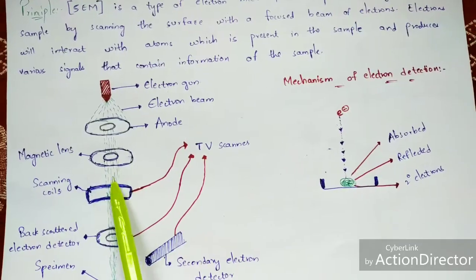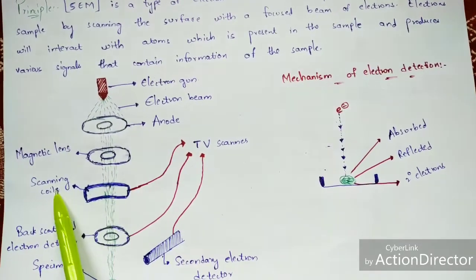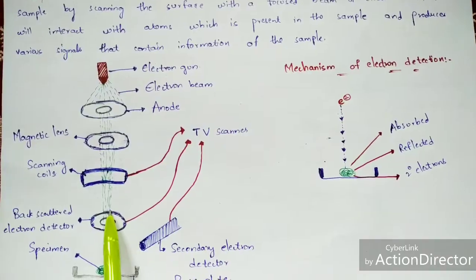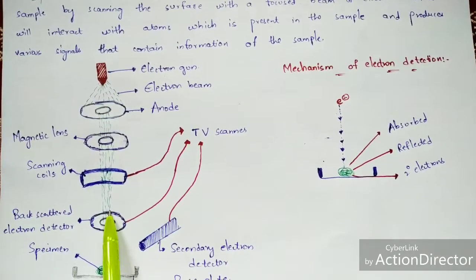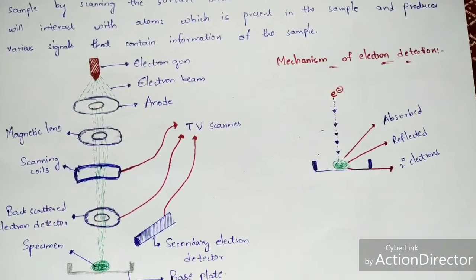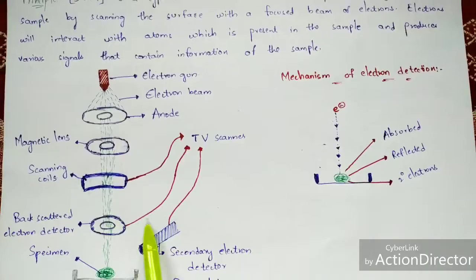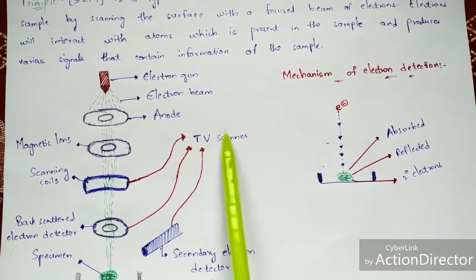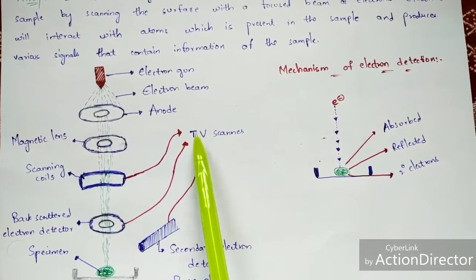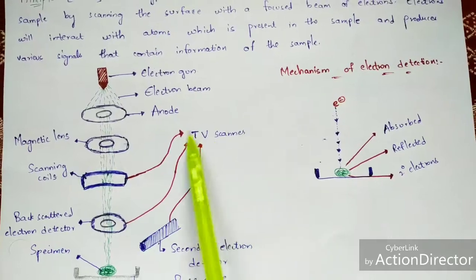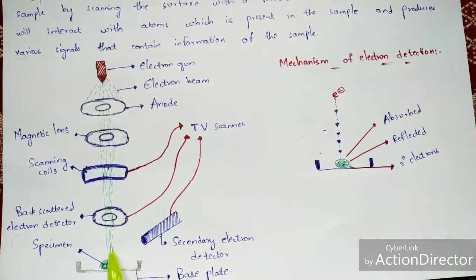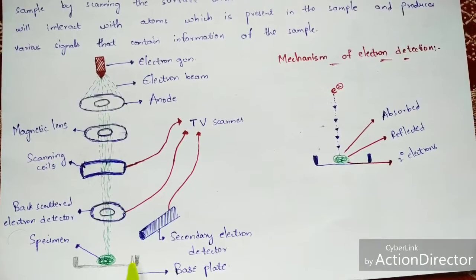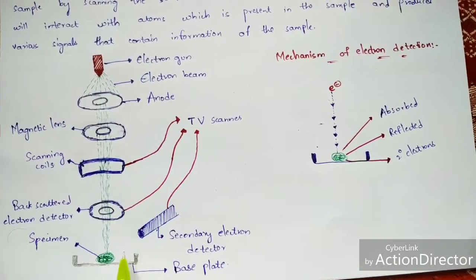From the magnetic lens, the electrons move to the scanning coils. The scanning coils, backscattered electron detector, and secondary electron detector all play a major role. These three are connected to a TV scanner, so in the TV scanner we can easily find the image. These electrons then fall upon the specimen, which is placed upon the base plate — the base plate of the electron microscope.